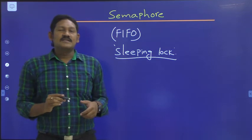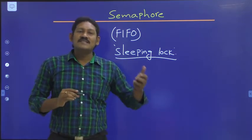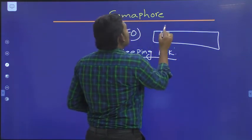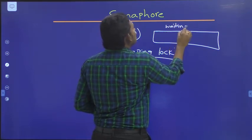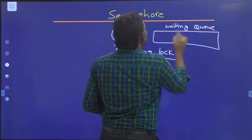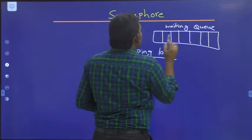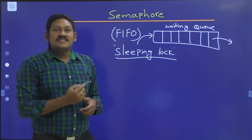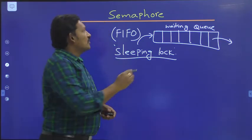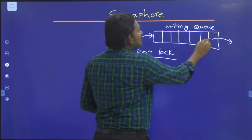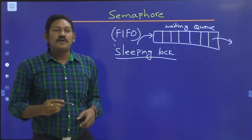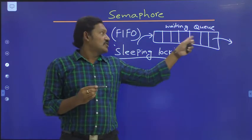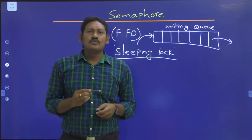As soon as the semaphore becomes available, one of the tasks from the wait queue is involved. The waiting queue works FIFO — processes enter from one end and are taken out from the other. The process that entered first is sent to the semaphore first.